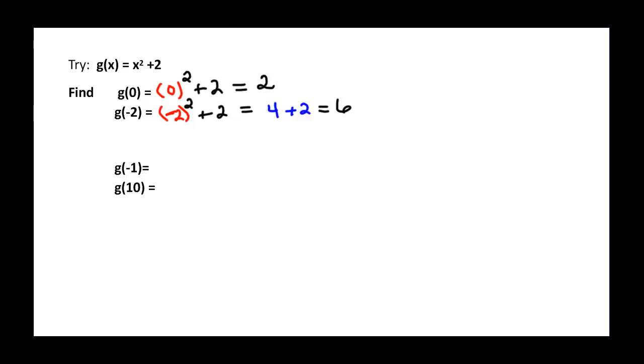Try again. g(-1). Well it's -1 and we're gonna square that. And then we're gonna add our 2. Well if we do that, -1 times -1 is positive 1 plus that 2. And we can see that g(-1) is equal to 3.